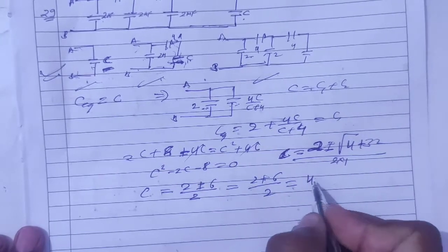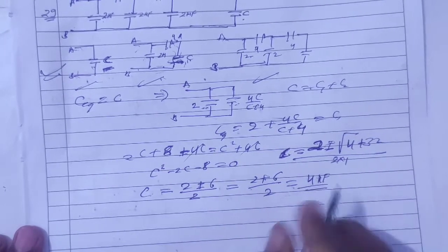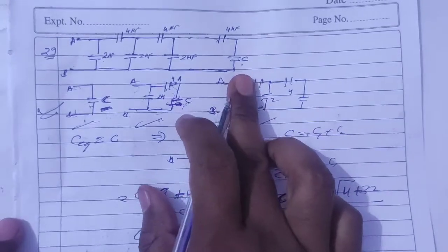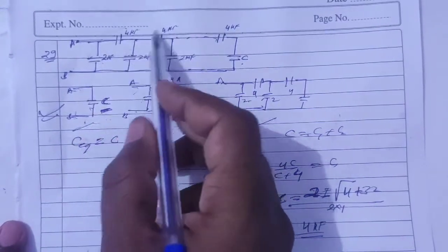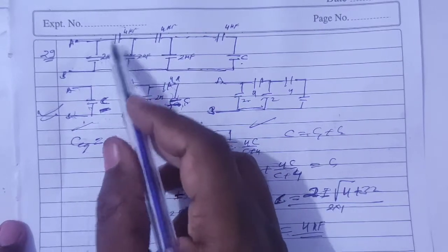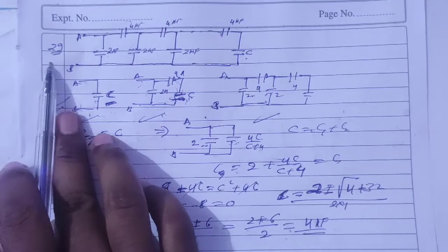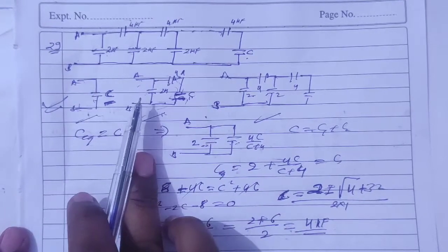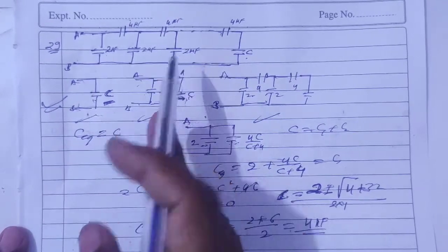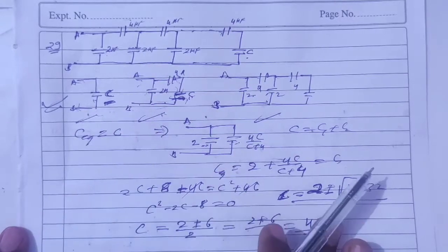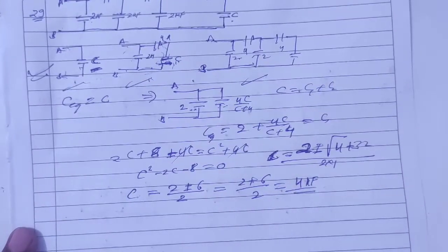4 microfarad. So if we keep C value as 4, it will not depend on how many pairs of 2 and 4 you have. You can also solve it like question number 28, by assuming infinite sections. In infinite, whether you have one pair or two pairs doesn't matter. The answer will come out the same.